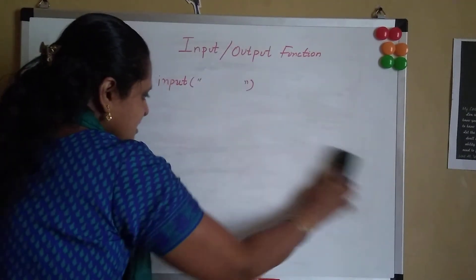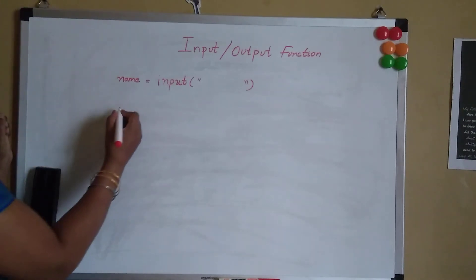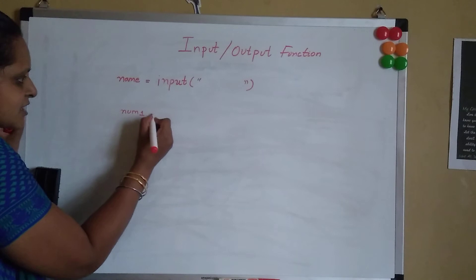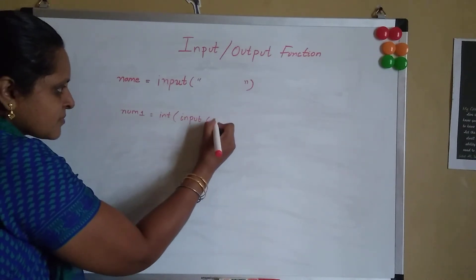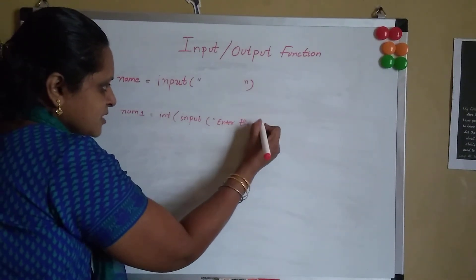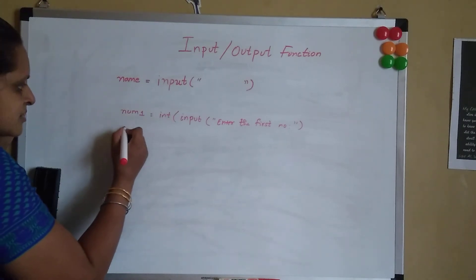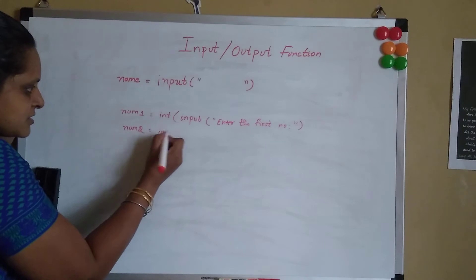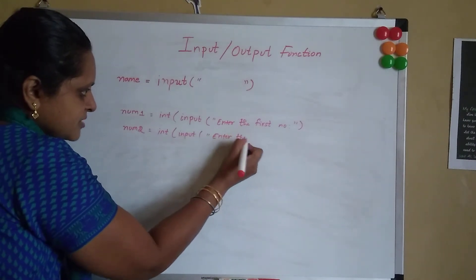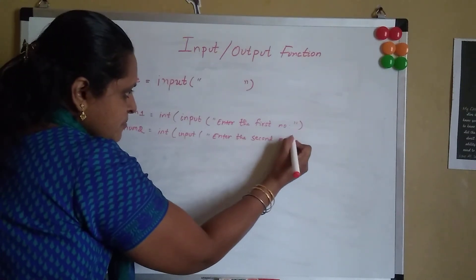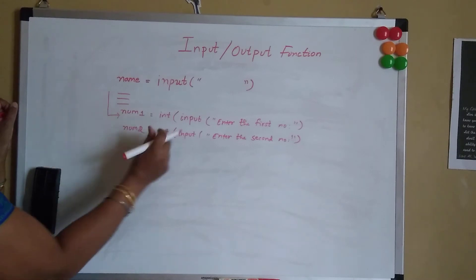Now let's see a small program where we take two numbers from the user, perform addition, and print the output. So we write: num1 = int(input("Enter the first number")) and num2 = int(input("Enter the second number")). When the program reaches the input function, the cursor goes to the IDLE shell, displays the message, and waits for user input.